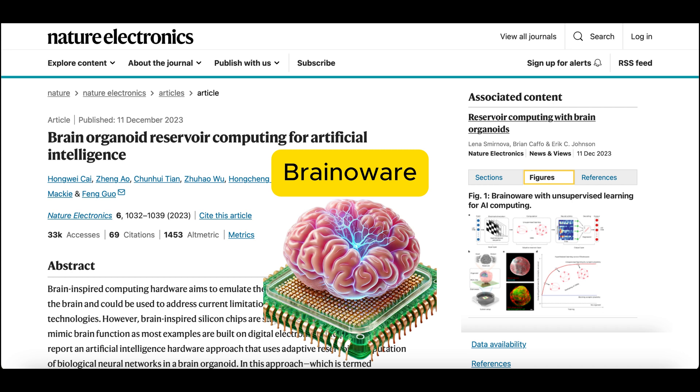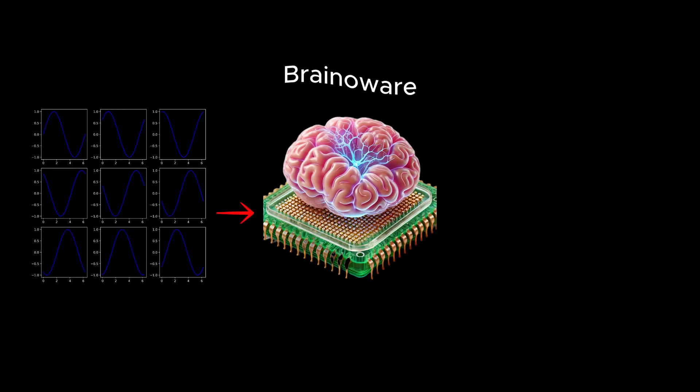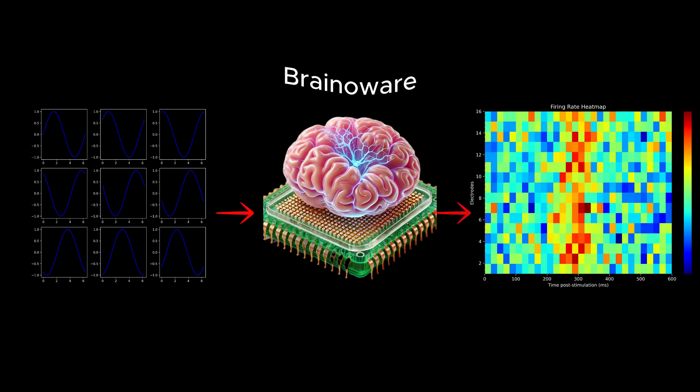Here we see the core setup of BrainAware. It shows a brain organoid mounted onto an MEA. This setup enables the organoid to receive spatiotemporal electrical stimulation as input and generate neural activity as output that will be sent back to MEA.